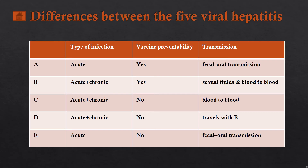Hepatitis E is also an acute infection, just like hepatitis A, but with no vaccine, and the route of contamination is also fecal-oral. So please remember to wash your vegetables very well and any kind of food — try to eat uncontaminated food to minimize the risk of contracting hepatitis A or E.